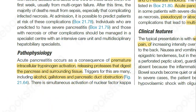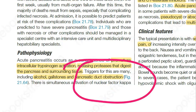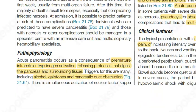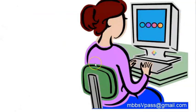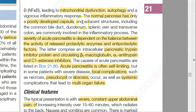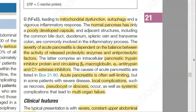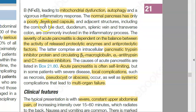The triggers for this include alcohol, gallstones, and pancreatic duct obstruction. If the pancreatic duct is obstructed, everything the pancreas produces gets stuck within it. The enzymes get activated prematurely and digest the pancreas itself. Other contributing factors include mitochondrial dysfunction and autophagy, leading to an inflammatory response.